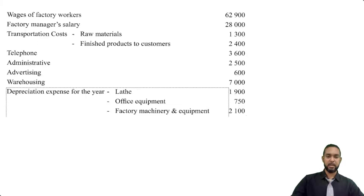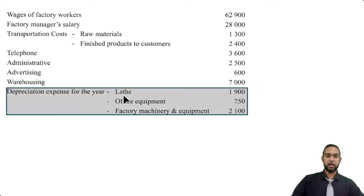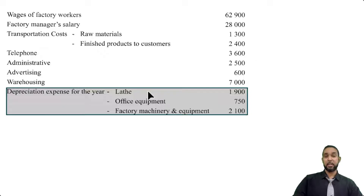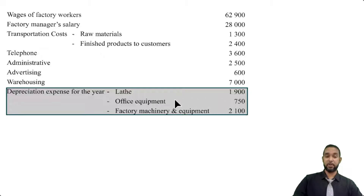Next we have depreciation on the lathe — a lathe is a tool used in woodworking that shaves things down to make them smoother. We also have depreciation on office equipment and factory machinery and equipment. Office equipment depreciation won't go in the manufacturing account.